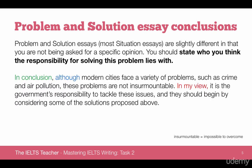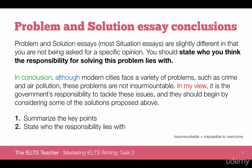In your conclusion, after summarizing the content of your essay — summarizing what the problems are — you should state who you think the responsibility for solving these problems lies with. For example: in conclusion, although modern cities face a variety of problems such as crime and air pollution, these problems are not insurmountable — insurmountable just means impossible to overcome. In my view, it is the government's responsibility to tackle these issues and they should begin by considering some of the solutions proposed above. It's a nice, fluent, and coherent conclusion — we've said what the problems are and made a clear statement as to who should tackle them.